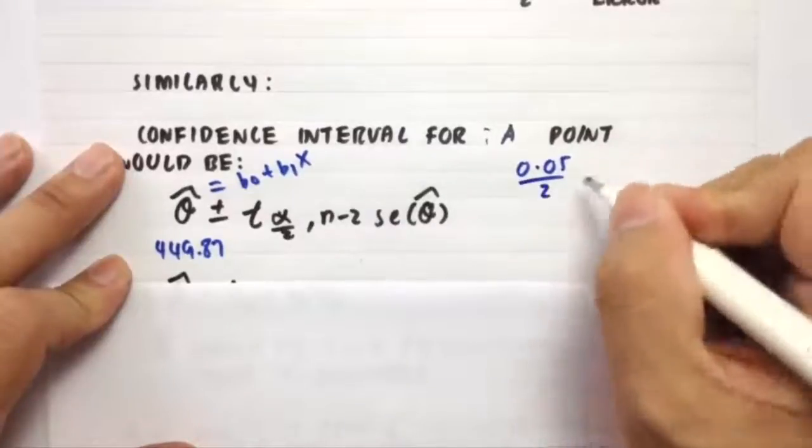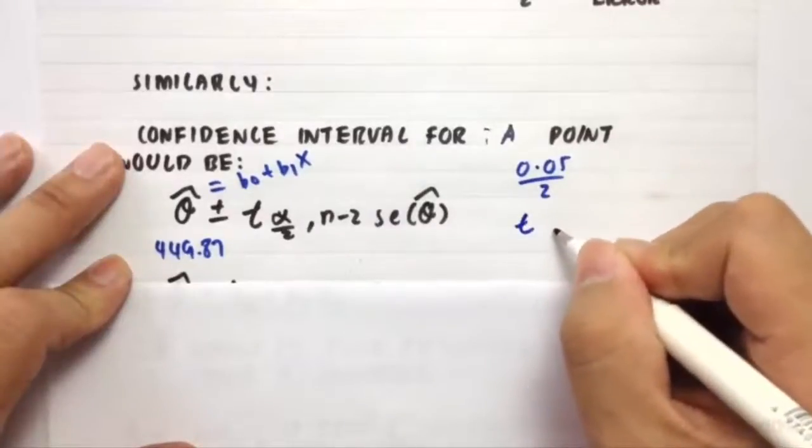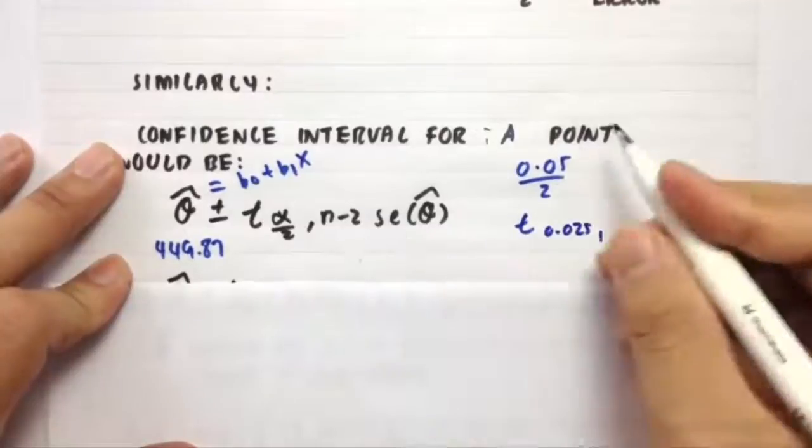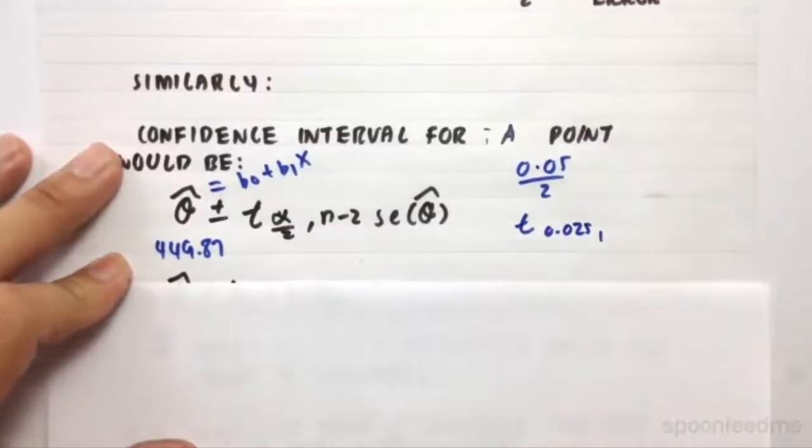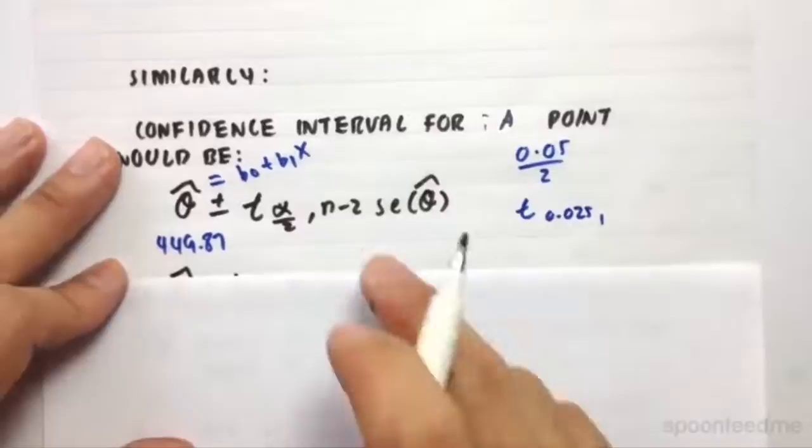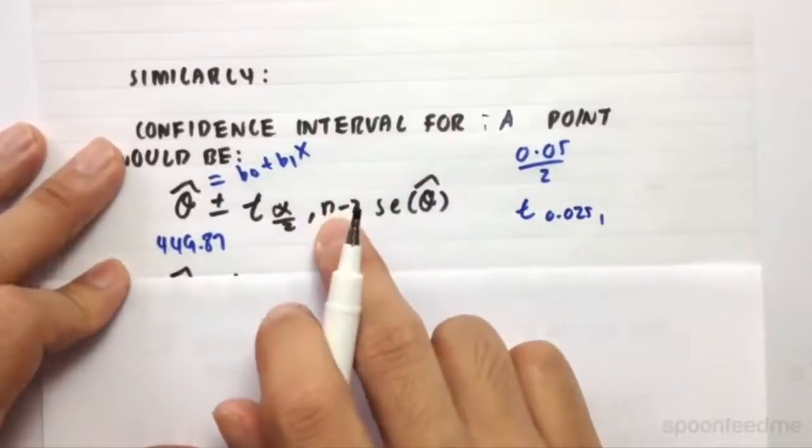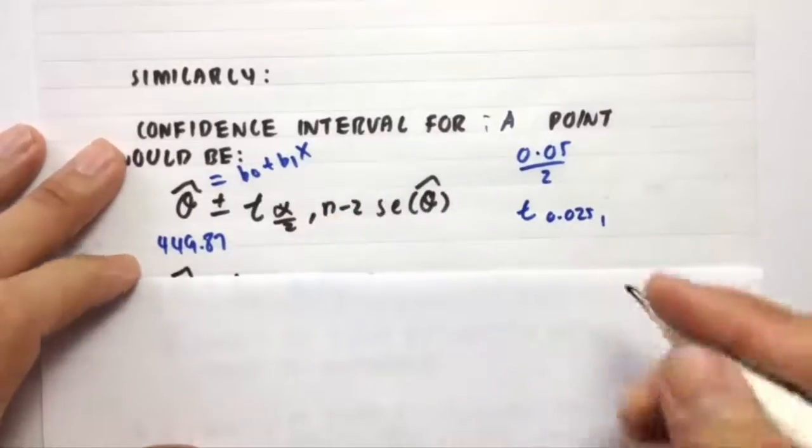And then we divide that by two, and then you get T 0.025, n minus 2. So because there's two parameters, that's why the degrees of freedom are reduced.